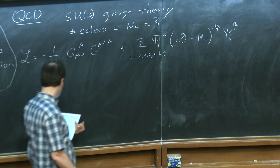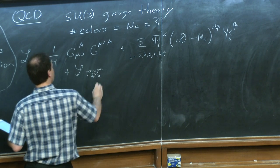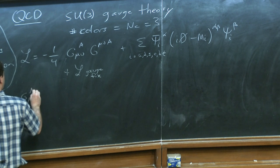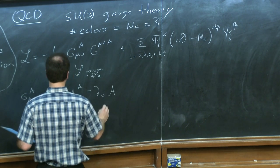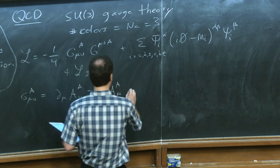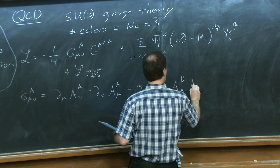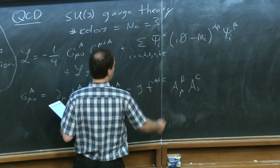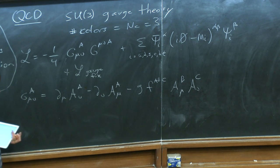It's a very simple theory that describes lots of different phenomena. The field strength involves the gluon field: it's an antisymmetric combination of the derivative and the gauge field. Because the theory is non-abelian, there's an extra term involving structure constants and two gluon fields. This last term is what makes QCD different from QED — it comes about because it's non-abelian. When you square the field strength, it means there are interactions between the gluons themselves, not just gluons with quarks as in QED, but also between the gluons.